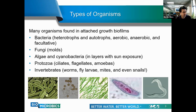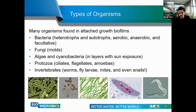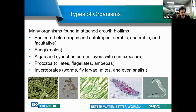Attached growth systems and biofilms also harbor different types of fungi — mostly molds as opposed to yeast. In wastewater systems, molds are the most common type and they do really well at low pH compared to other organisms. In problem systems where industrial process wastewater has a low pH, you'll see a lot more fungi than the usual types of bacteria.